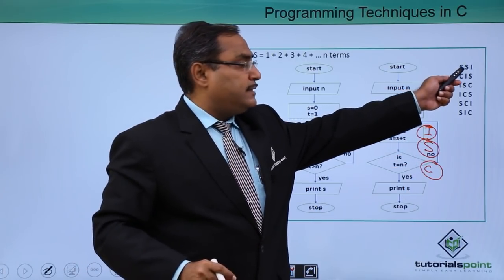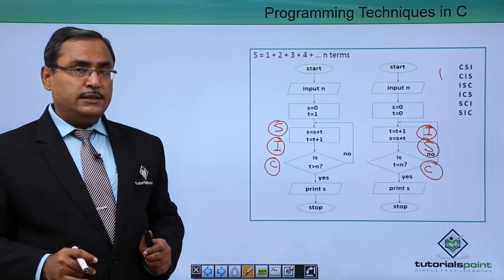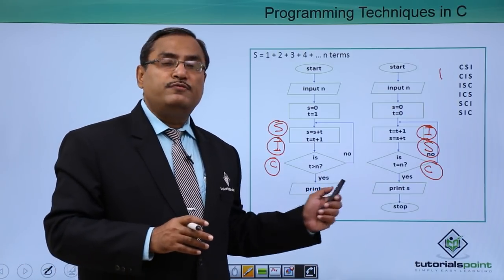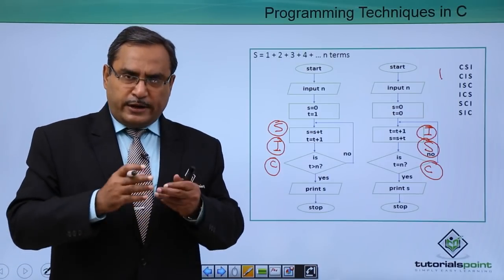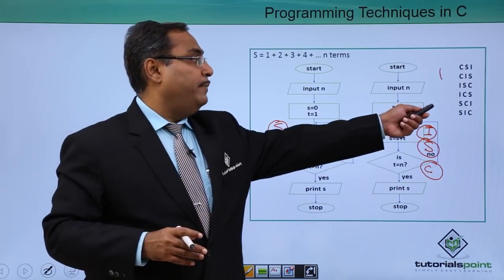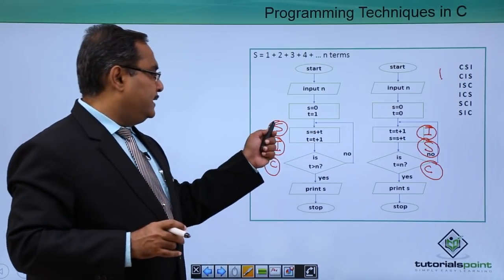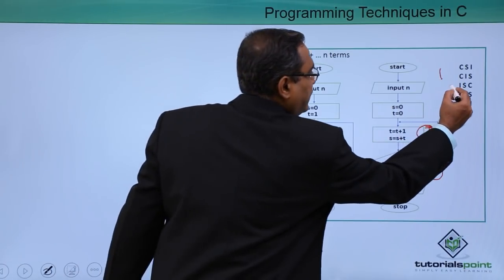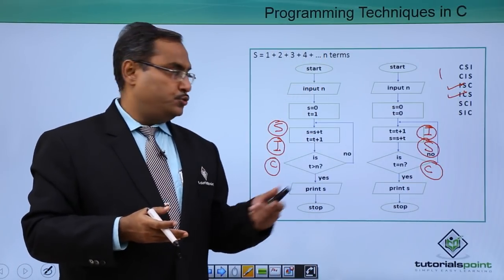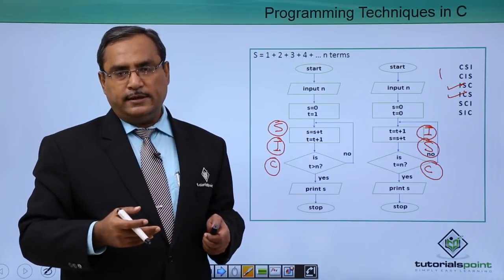The three letters S, I, and C can have six different combinations, meaning this flowchart can be done in six different ways. I have demonstrated two of them. As an assignment, please try to solve the flowchart with the remaining combinations of S, I, and C, tracing for values of n = 4, 5, or 6.